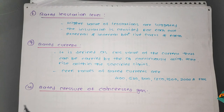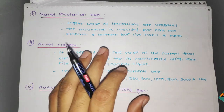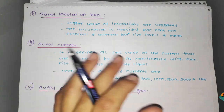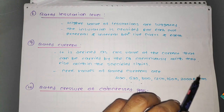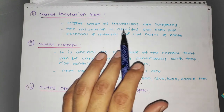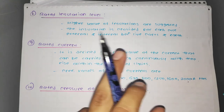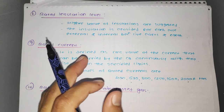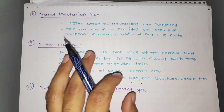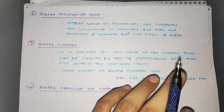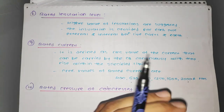Another rating is rated current. It is defined as the RMS value of the current that can be carried by the circuit breaker continuously with temperature rise within specified limits. Preferred values of rated current are 400, 630, 800, up to 2000 amperes. The rated current is checked by carrying out a temperature rise test, and current-carrying parts along with contacts are designed based on temperature rise. High conductivity material must be used; if low conductivity, cross-section must be increased.